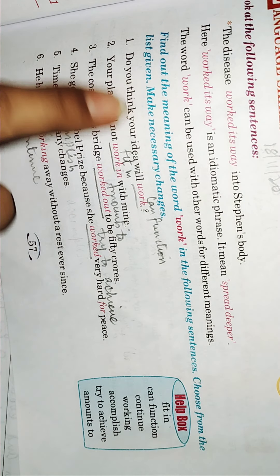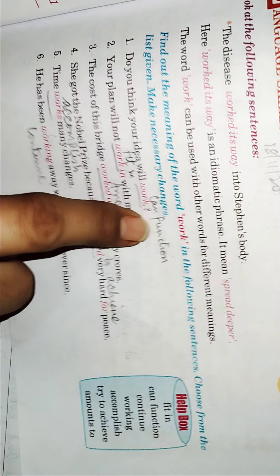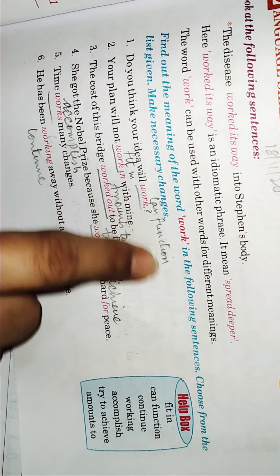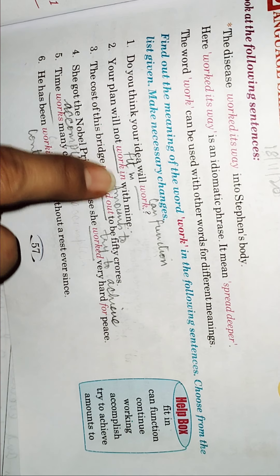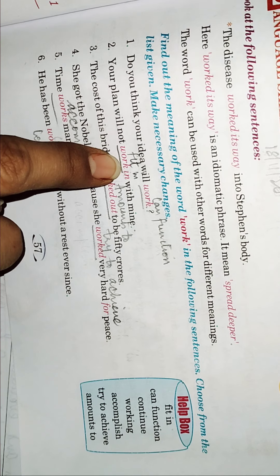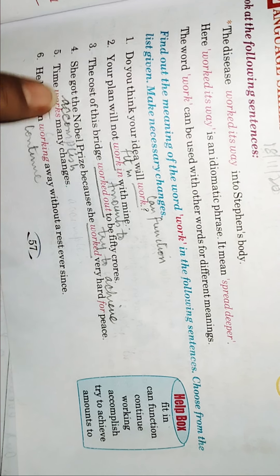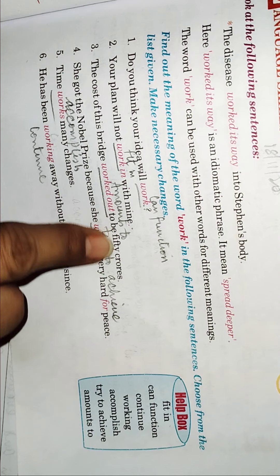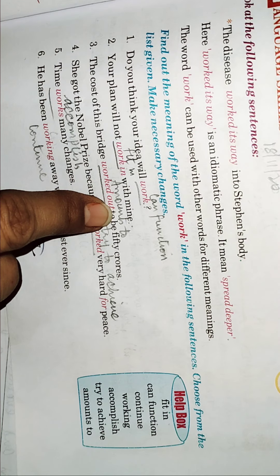Here, do you think your idea will function? Here it means can function. Your plan will not work in with mine. Means your work, your plan will not fit in. The cost of this bridge worked out to be 50 crores means amounts to. Here it means amounts to.